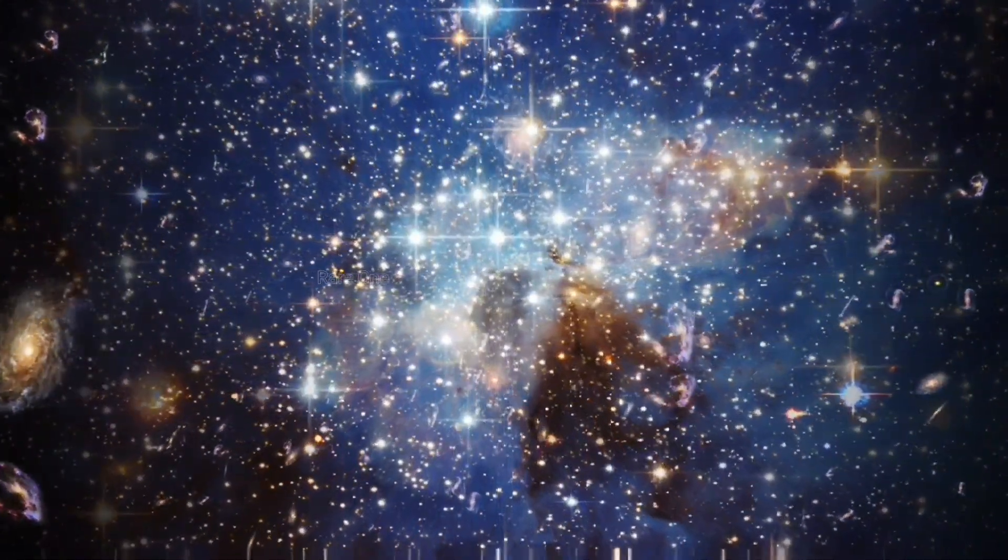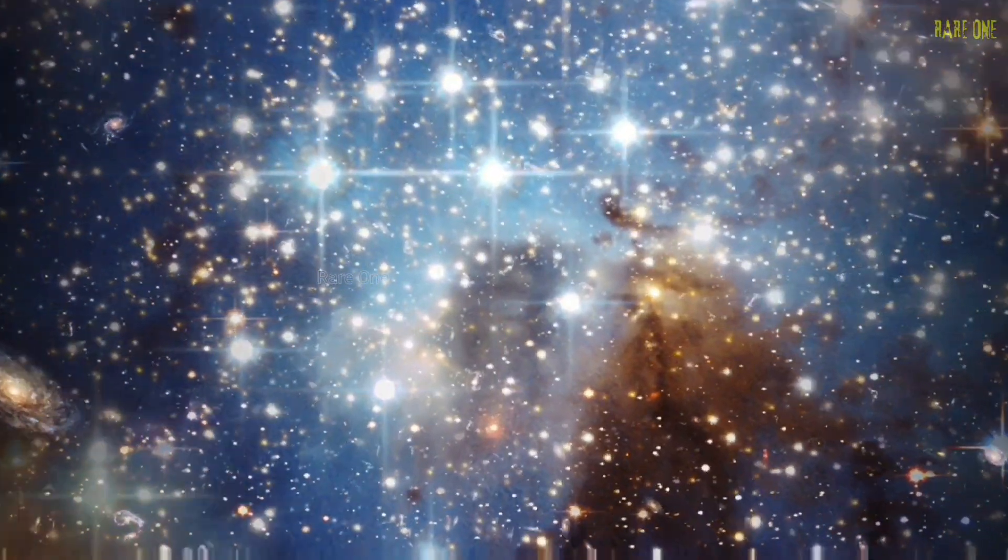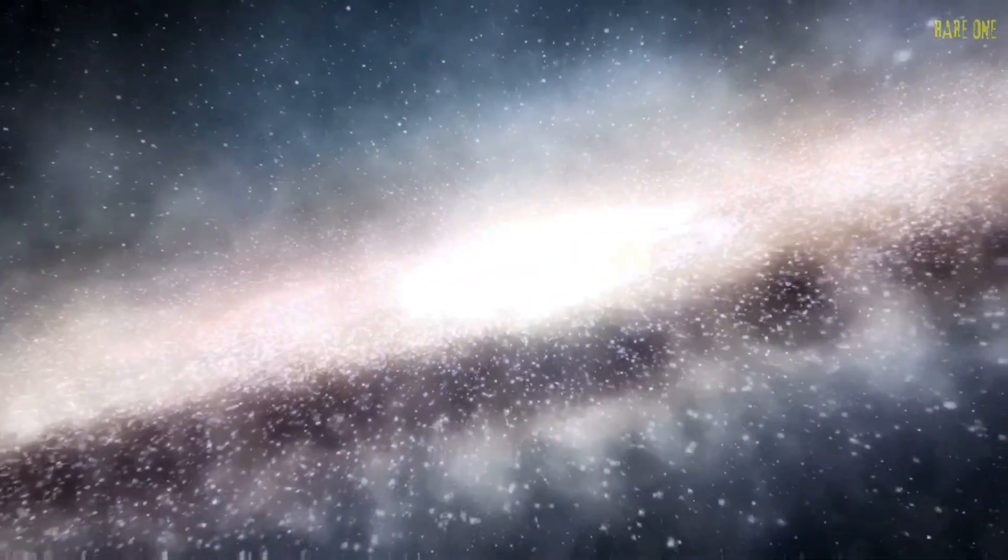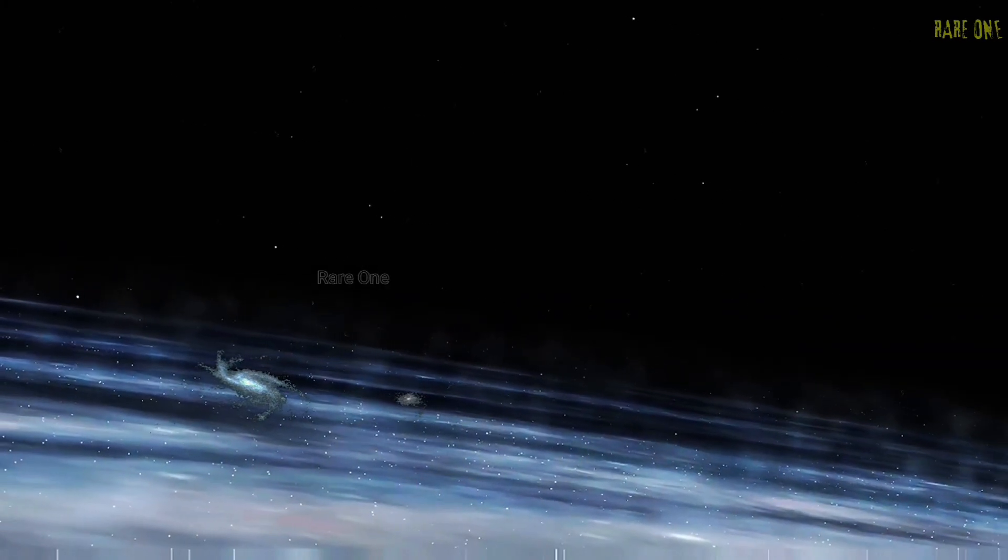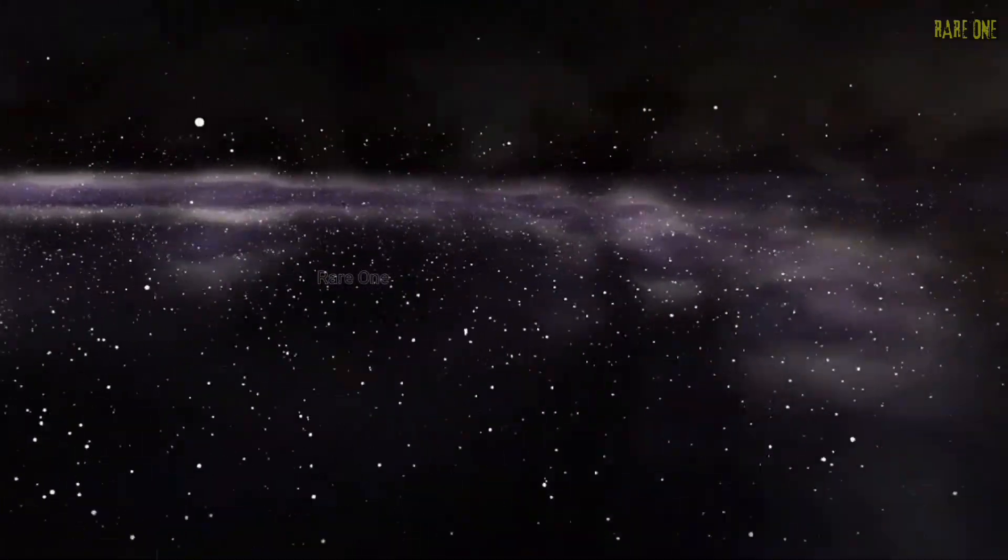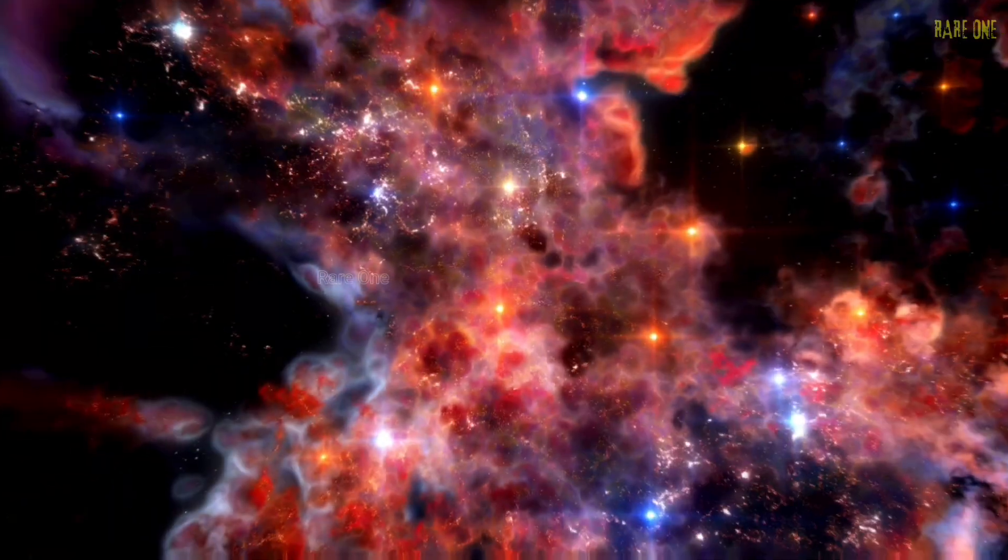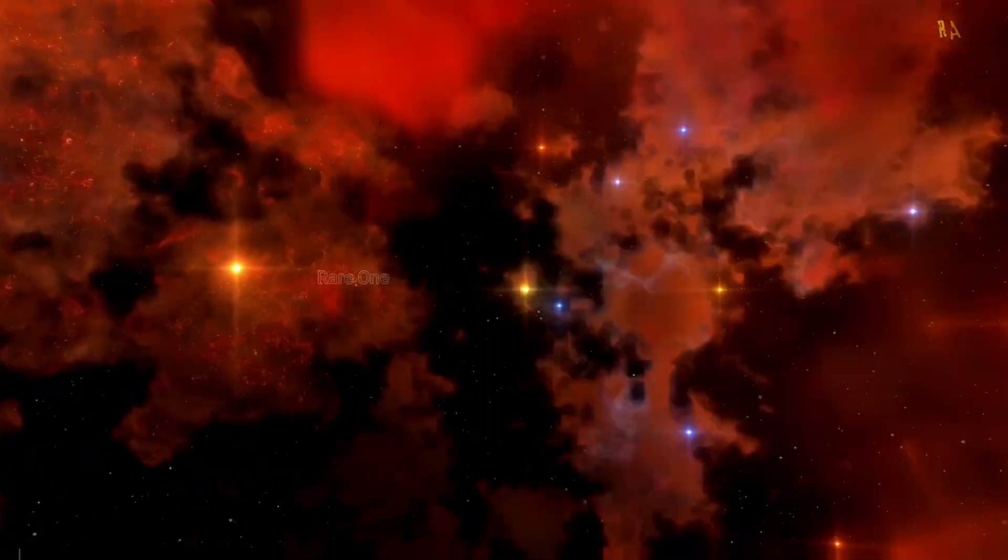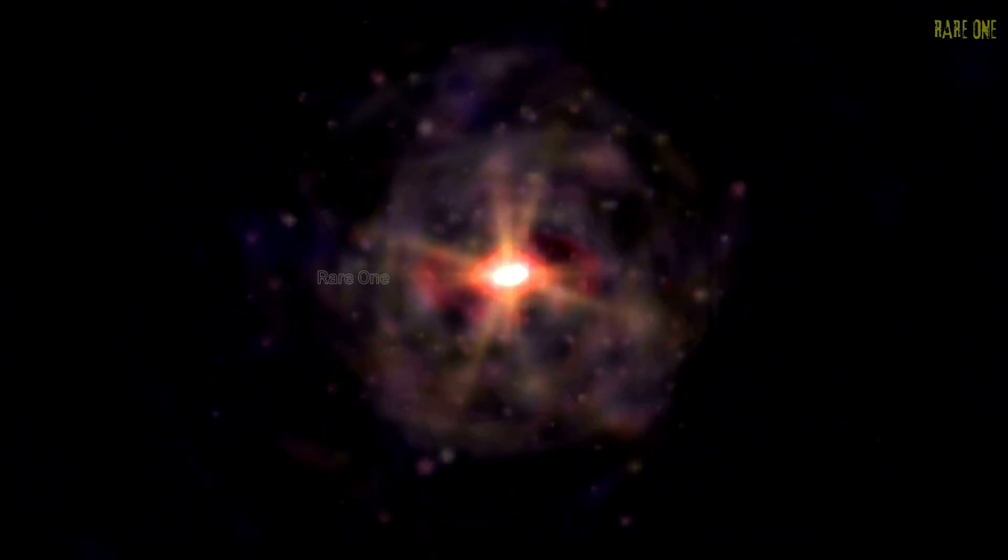Picture the universe 4.6 billion years ago. It's already ancient by cosmic standards, about 9 billion years old, roughly two-thirds of its current age. But here's what's fascinating: things look surprisingly familiar. The Milky Way was already there, looking much like it does today. Hundreds of billions of stars were already shining, casting their light across the galaxy's spiral arms. Small dwarf galaxies were being slowly consumed by larger ones—cosmic cannibalism happening on scales we can barely comprehend. And scattered throughout those majestic spiral arms were stellar nurseries, regions where new stars were constantly being born. Imagine dozens, maybe hundreds of these cosmic maternity wards active at any given moment across our galaxy. But here's the thing that blows my mind: our sun couldn't have formed much earlier than it did. Why? Because the universe needed time to cook up the right ingredients.